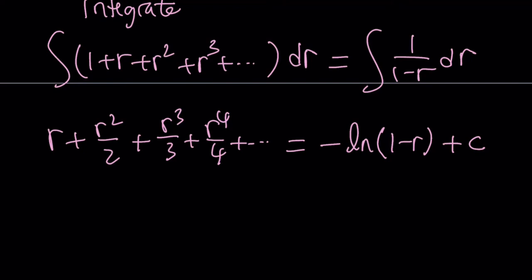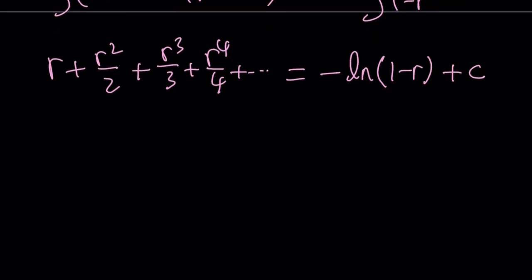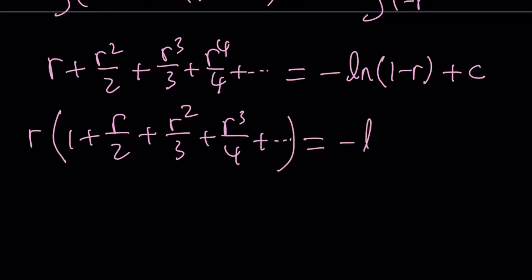How? I can take out an r, right? Because r is a common factor. And so we can pull the r out. And inside, we're going to get 1 plus r over 2 plus r squared over 3 plus r cubed over 4 plus dot dot dot. And guess what? That's our original expression. Awesome. That's great.